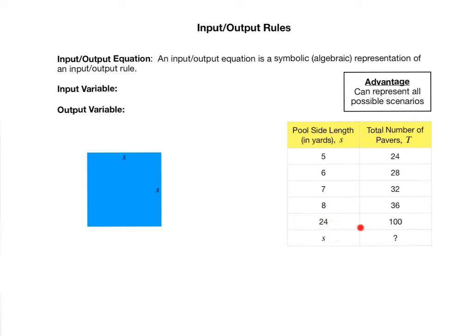When we write an input-output table, it's very valuable. It tells you, for example, if you've got a side length of 7 yards, then you need 32 total pavers to do the job. However, in this table, I don't have a row for 13, a side length of 13 yards, or a side length of 40 yards, or a side length of 107 yards. So there's so many possible scenarios that the table can't represent all of them.